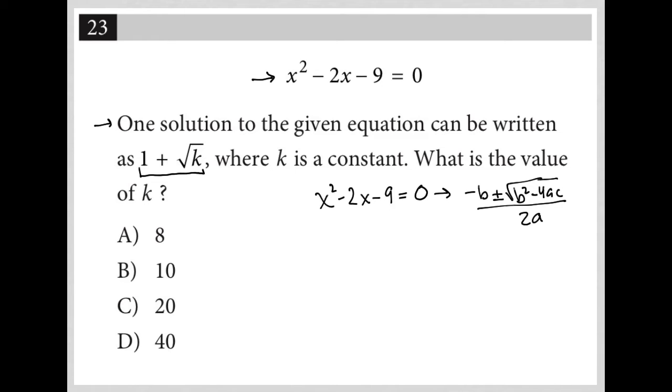For us, our a value is 1 because there's no coefficient in front of the x². Our b value is -2, which comes from the coefficient in front of x. And our c value is -9, which comes from our integer at the end.